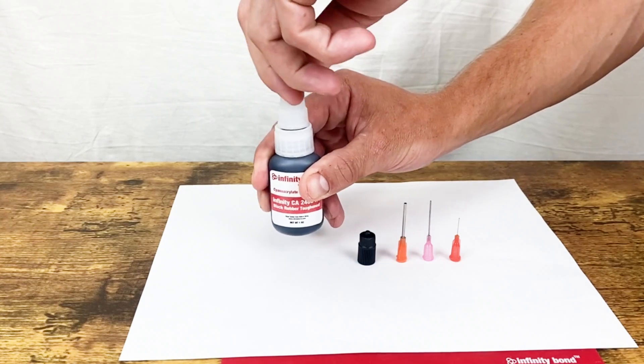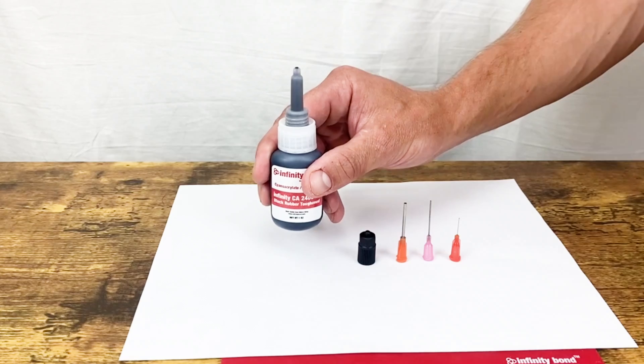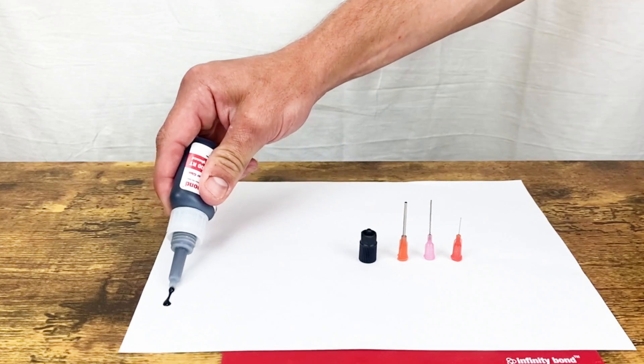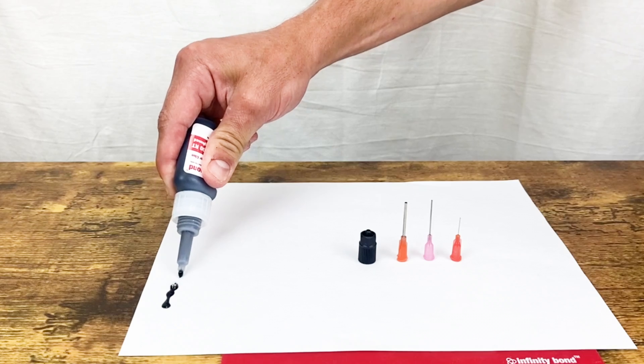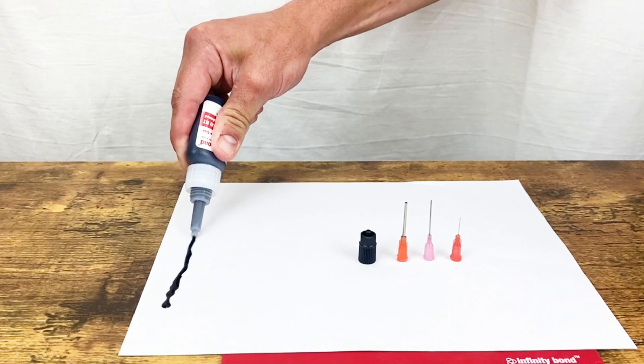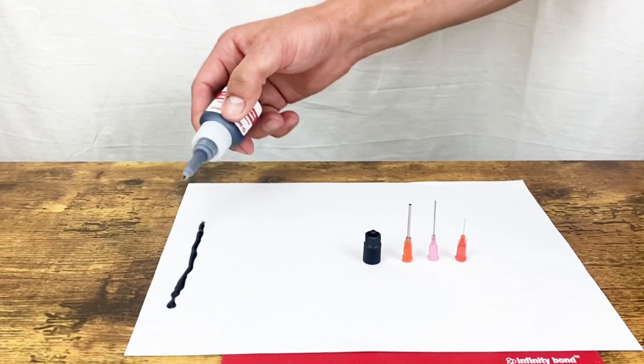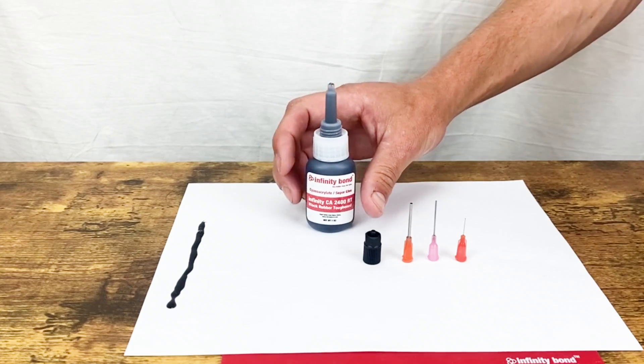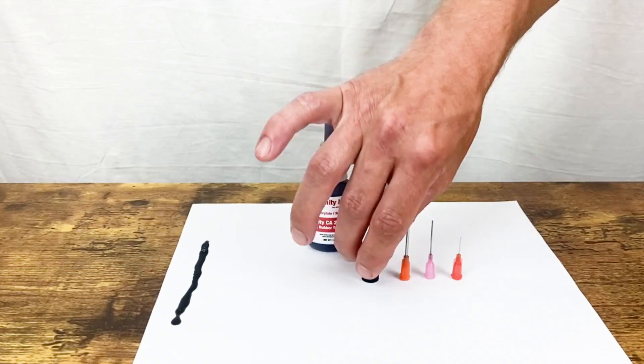Precision needles are very easy to use and work with all Infinity Bond cyanoacrylate superglues. The black 10mm lure lock adapter is great for attaching tips and needles to static mixers or directly to superglue bottles, making them a go-to accessory for structural adhesive dispensing.